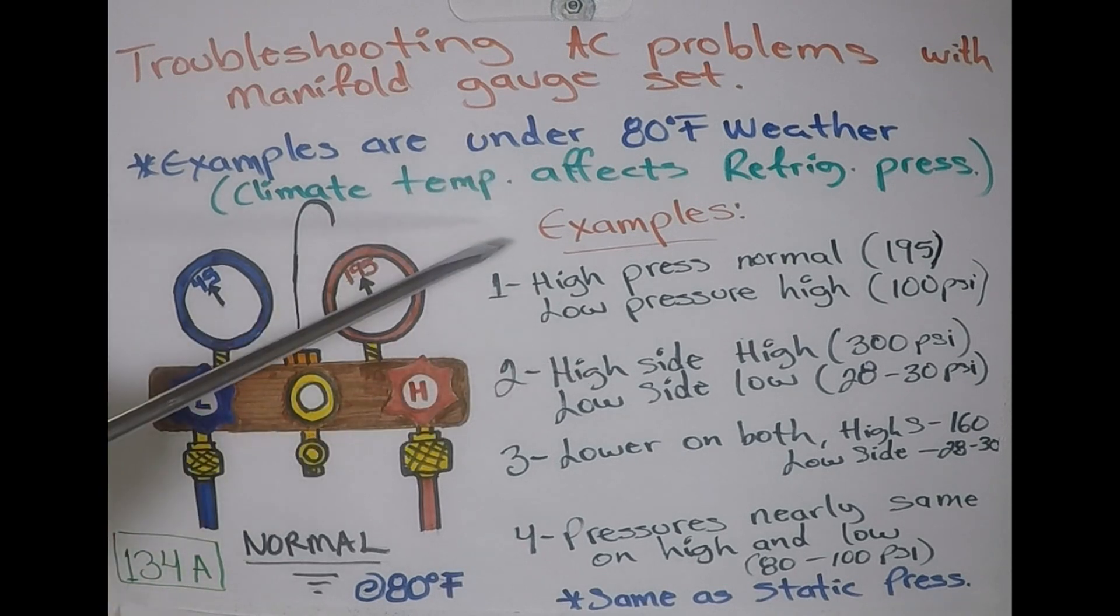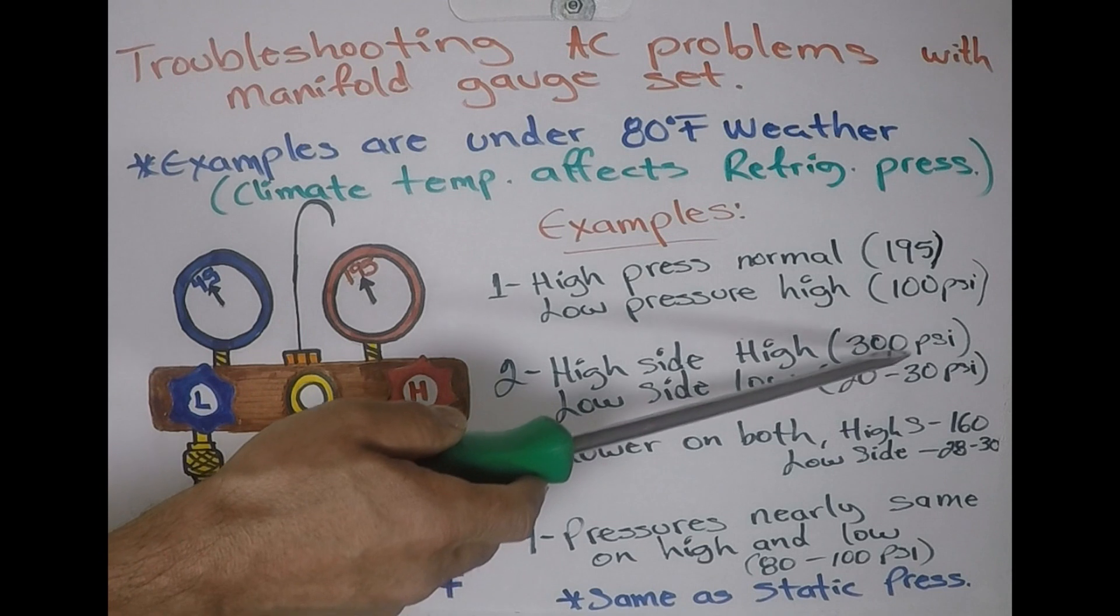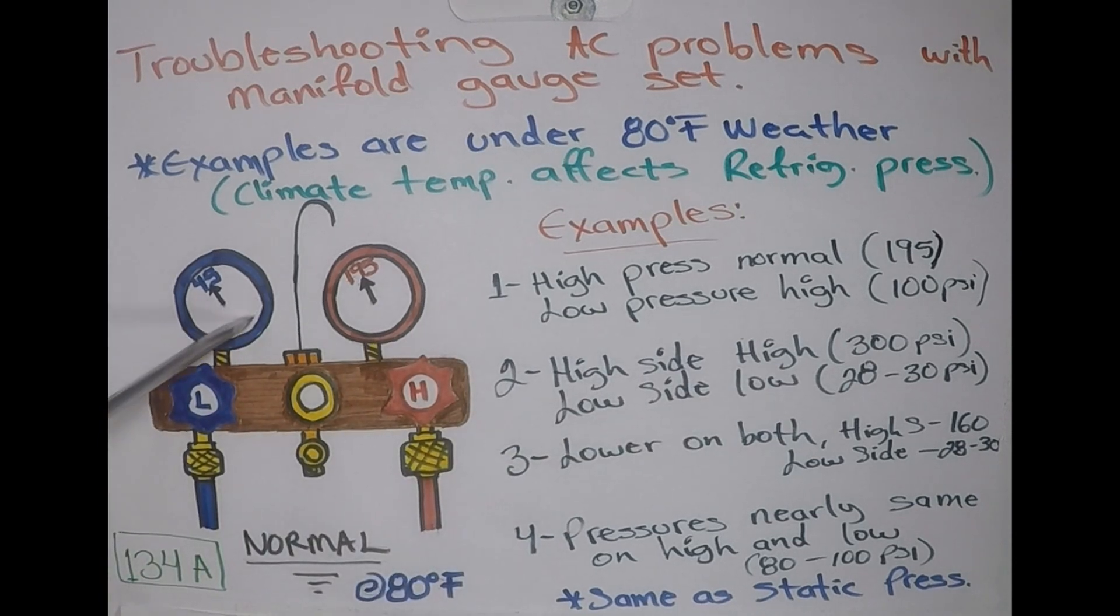And it's maintaining that high side too high, and as the compressor circulates the refrigerant, the pressure drops on the low side below what it should be, because there's not enough flow to maintain it at the desired 45 PSI.